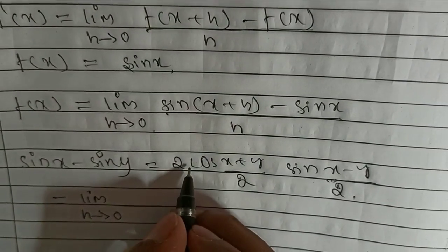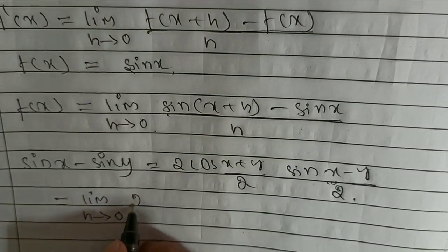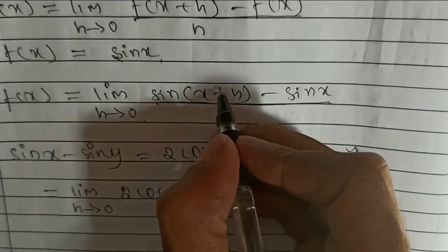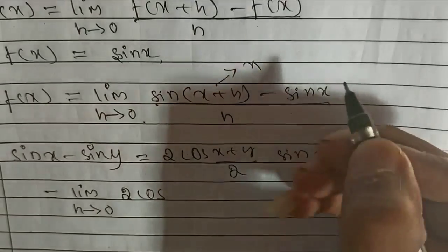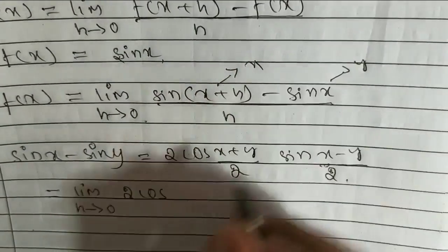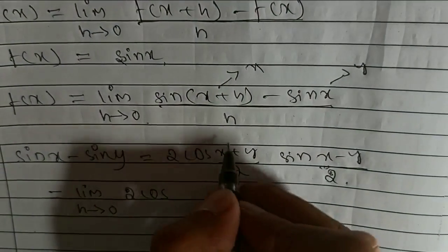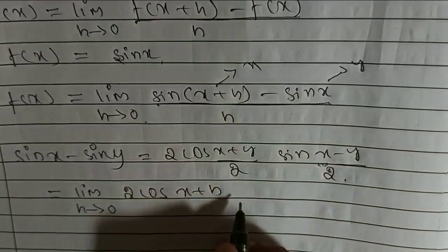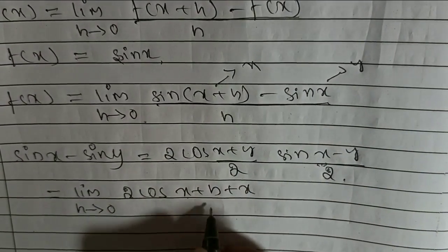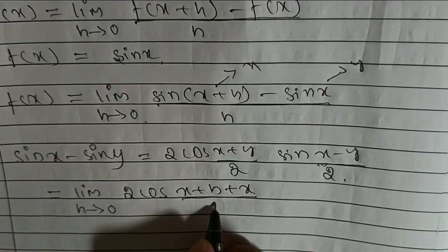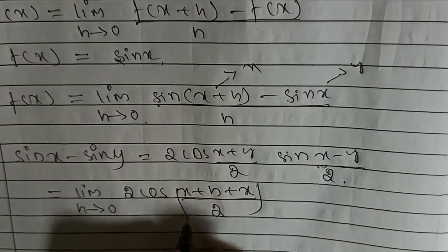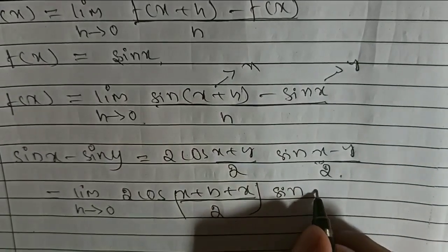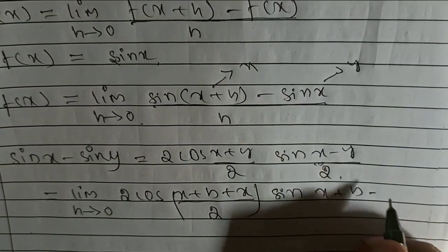Here see the formula 2 cos x. This is x and this is y. I will put x means x plus h, y means x by 2 here. Sin x means x plus h, y means x.